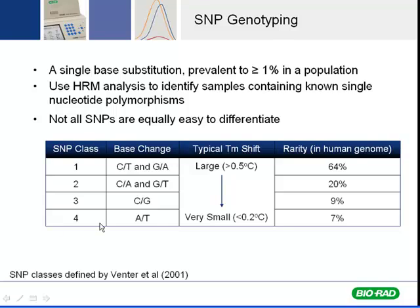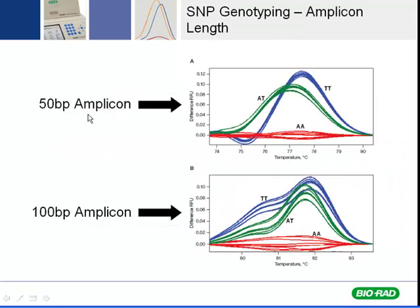HRM allows you to do all of these with good experimental design, good instrumentation, and of course good software. One of the key experimental design flaws that can happen, particularly for class 4 SNPs, is amplicon size. It's important to design primers such that the amplicons containing a class 4 SNP are small.